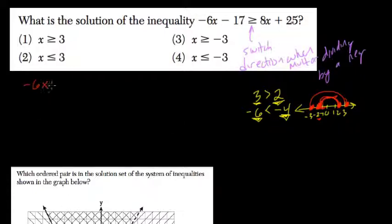And here, with negative 6x minus 17 greater than or equal to 8x plus 25, decide what side do you want your variables to go on? I'm going to choose the right-hand side because I know that this negative 6x, if I add it, that'll give me a positive value to work with.